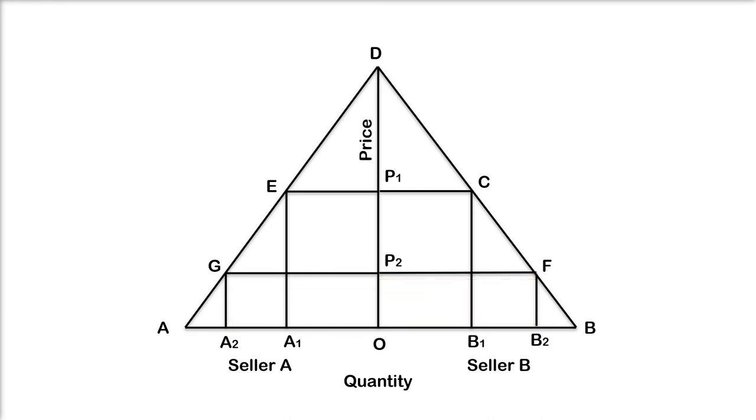According to Edgeworth, OP2 should not be regarded as stable price. This is because there is always an incentive for either firm to raise its price to OP1 and earn monopoly profits. And the other firm will also follow suit and raise its price a little above OP2 and earn higher profit. This again restarts the price war between the duopolists.